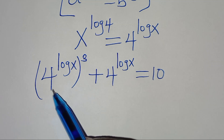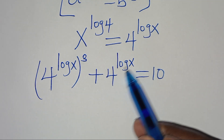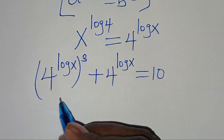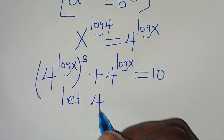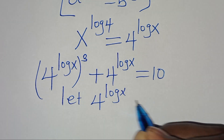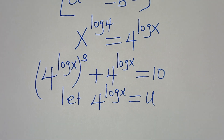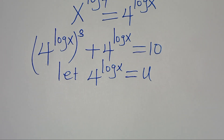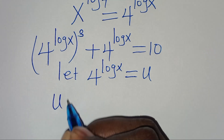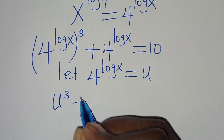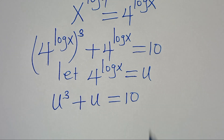We can clearly see that 4 to the power of log x is common here, and that implies we can let 4 to the power of log x be equal to u. Substituting u, this means we have u to the power of 3 plus u, this is equal to 10.